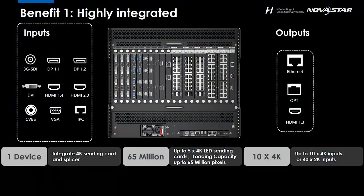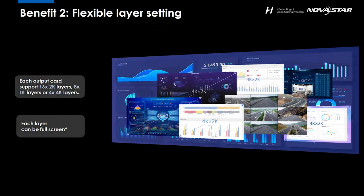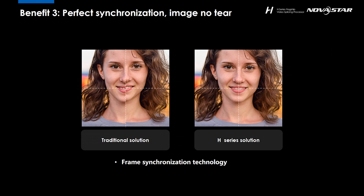Now let's move on to the next part. Darren, you must have encountered situations where you needed to open up several layers and put in different video sources. Yes, of course. So here comes benefit 2: Flexible Layer Setting. Each sending daughter card on the H9 supports 16 2K layers, or equivalently 4 4K layers. Each layer is able to go full screen. So each daughter card supports 16 layers — and H9 has 5 daughter cards — meaning H9 supports 80 layers total. And benefit 3: Perfect Synchronization.